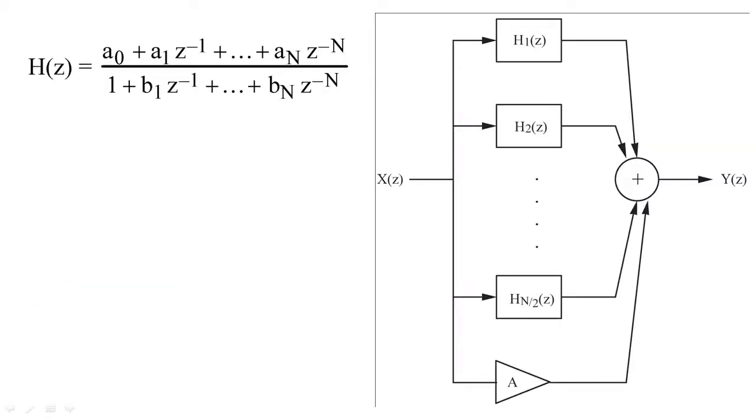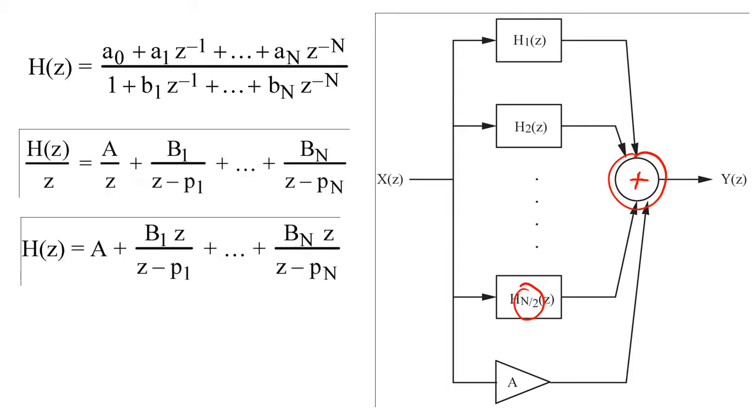If we arrange our second order filters in a parallel configuration, we will again need n over 2 sub filters to implement our larger filter. When we place filters in parallel, we must add the frequency responses of all the filters together. Therefore, we use partial fraction expansion to rewrite our filter equation as a sum of residuals and poles.